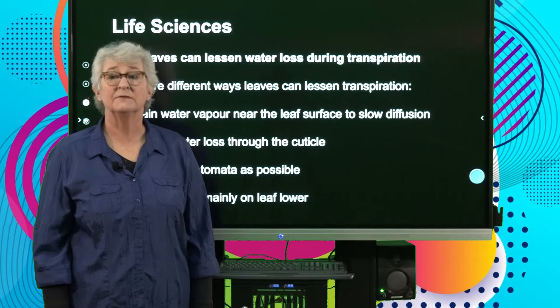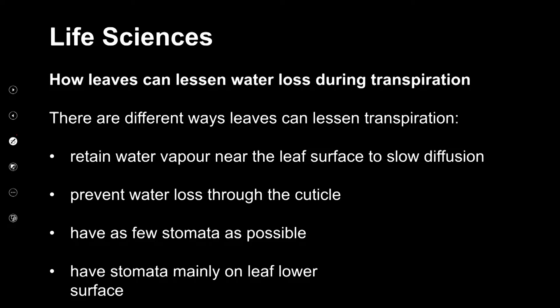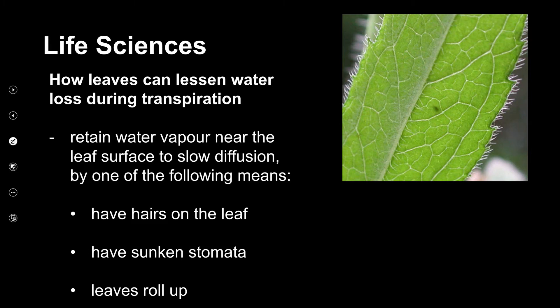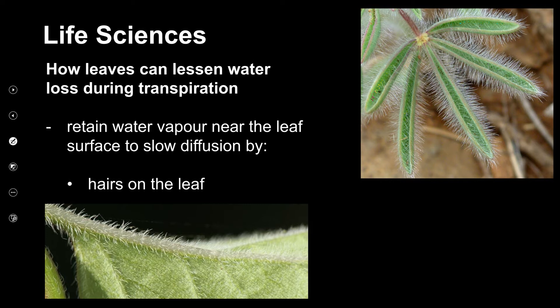We're now going to look at the different ways plants can lessen transpiration. They can retain water vapour, prevent water loss, have as few stomata as possible, and have stomata mainly on the lower leaf surface. The first method is retaining water vapour, and plants can do this by having hairs, having sunken stomata, or by having leaves that roll up.